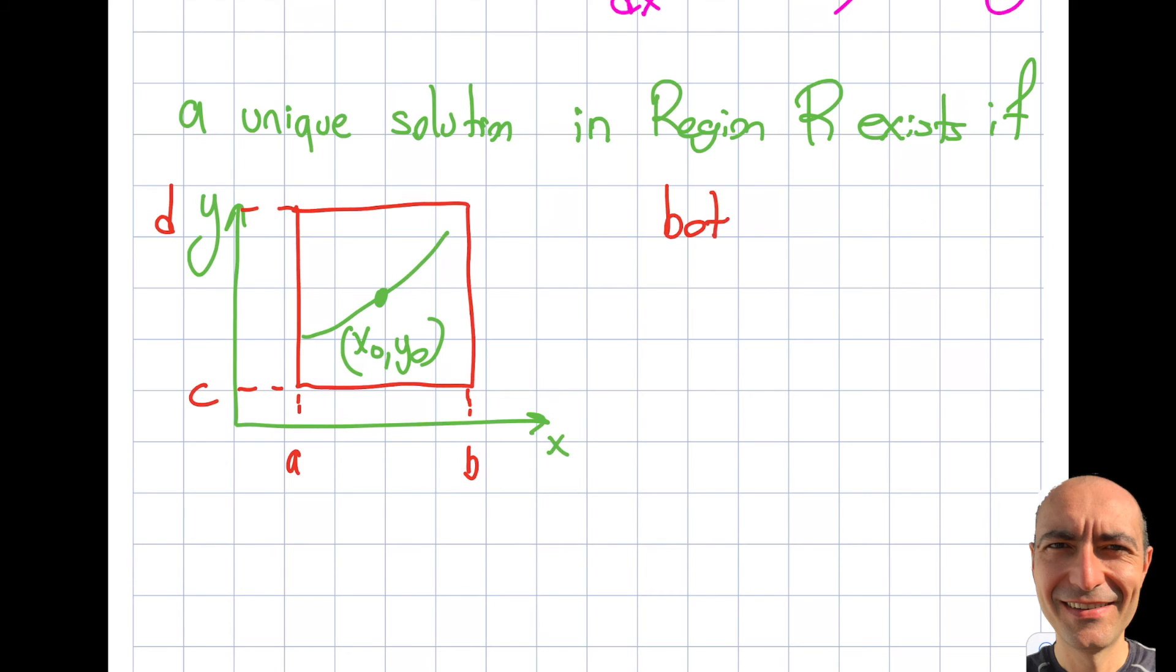I can have a unique solution in this region if both f and its partial derivative with respect to y are continuous in this particular region. I don't care if there's a discontinuity elsewhere. If this function and its partial with respect to y is continuous within this region, then I'm good to go. I will have a unique solution and it will exist. If the discontinuity happens outside, I'm good to go with this particular region. So I only look at this region. Thank you for watching this segment. We'll catch up soon.